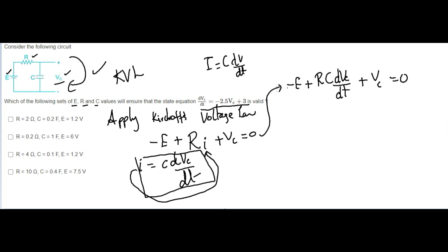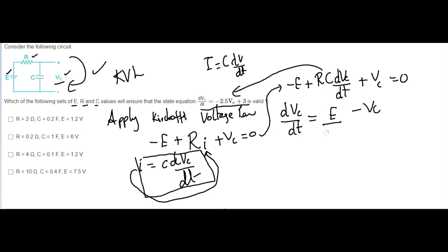Now we have to get this in state equation form, so isolate dVc/dt on one side and take everything else to the other side. The minus RC moves over, giving plus E and minus Vc on the right. Then dividing both terms by RC, we get dVc/dt = E/RC minus Vc/RC.